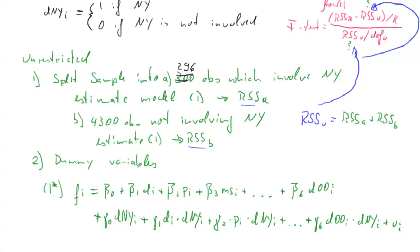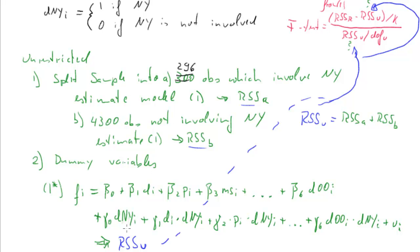The residual sum of squares from model 1* would directly give RSS_unrestricted, because we are allowing the relationship to vary for New York flights. Both strategies are exactly the same, and I am going to demonstrate this in MATLAB — I'll split the sample into two, estimate two regressions, and calculate RSS, then estimate the full model and show these two RSS values are identical.